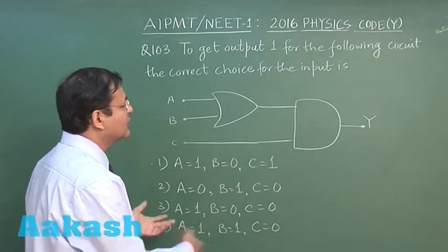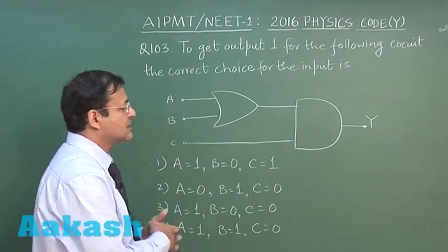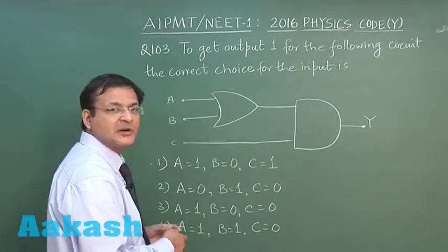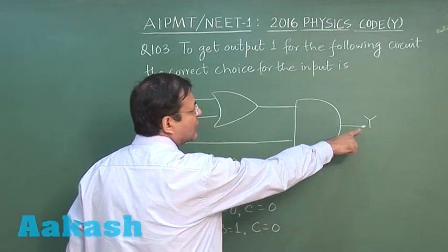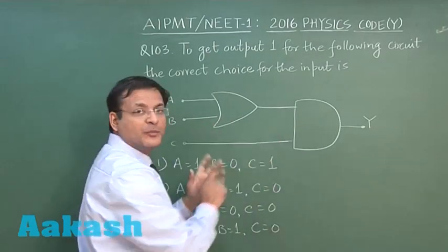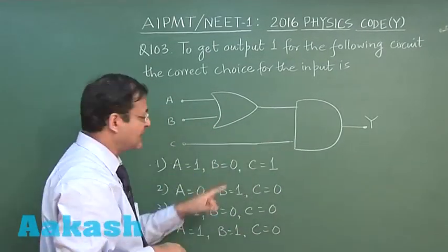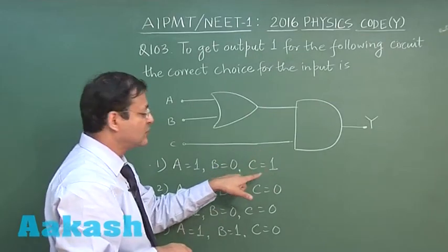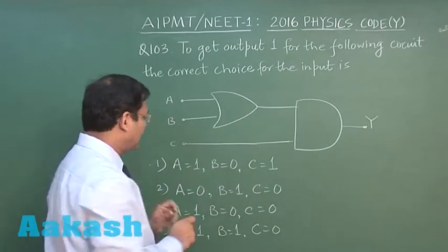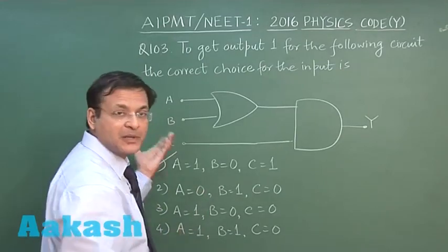So in this particular question you have to, you see, go by the options. You can always substitute options one by one. This is a very simple question in the sense that you see if you want 1 here and this is AND gate, so naturally both the input should be 1. So natural thing is that the value of c must be 1, and this is only one option which is having c as 1. So I will be marking answer 1 for this particular question. So very simple.